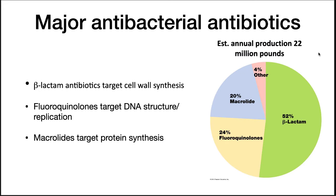Three major classes of antibiotics are prescribed today: beta-lactam antibiotics, such as ampicillin, that target bacterial cell walls; fluoroquinolones, that target DNA structure and replication; and macrolides, that target protein synthesis. These three classes account for 96% of all antibiotics prescribed to treat infections.